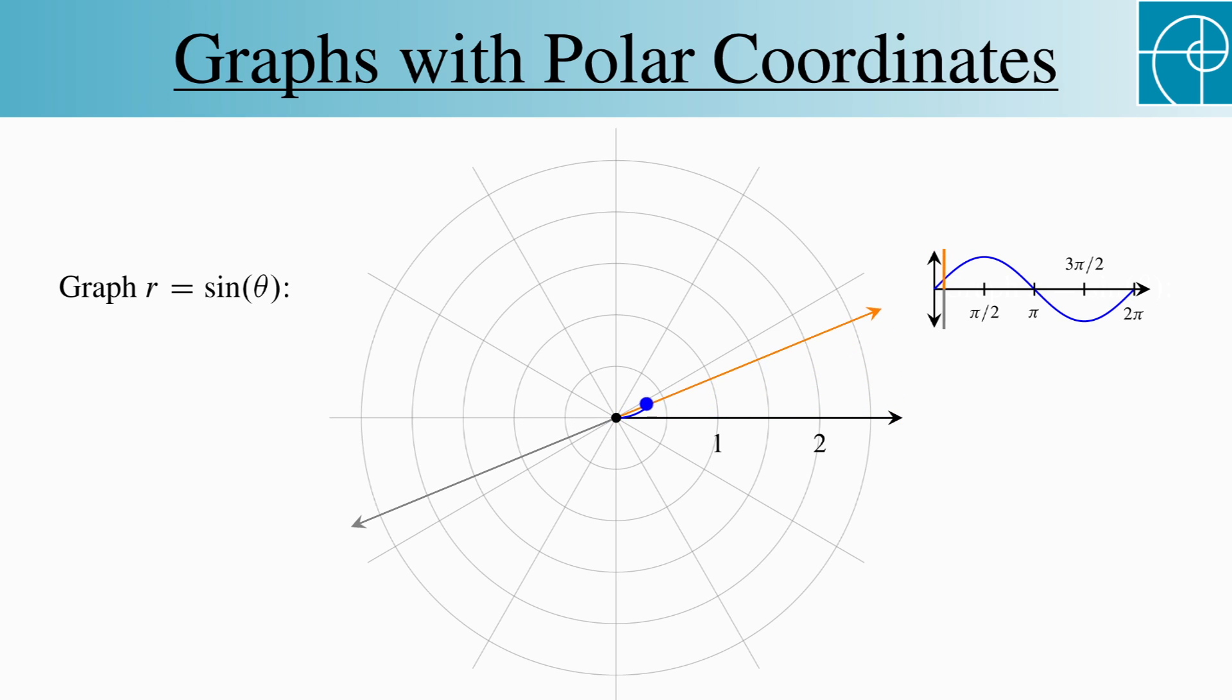As theta increases from 0 to pi over 2, sine of theta increases to 1. So on the graph, we trace a curve like this one.